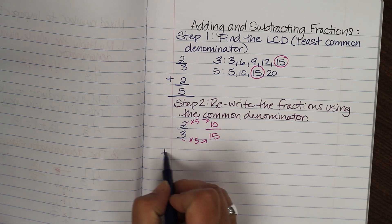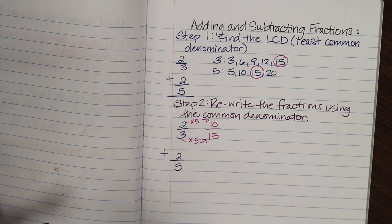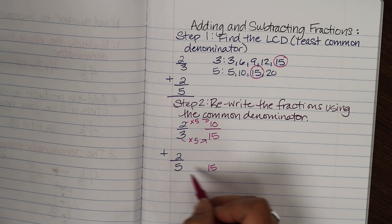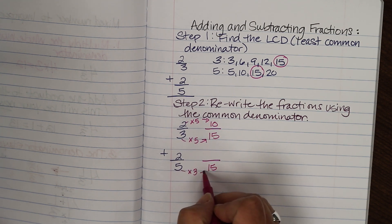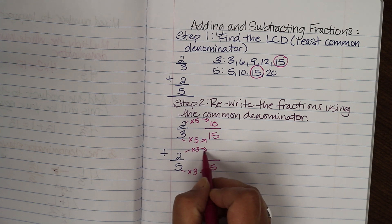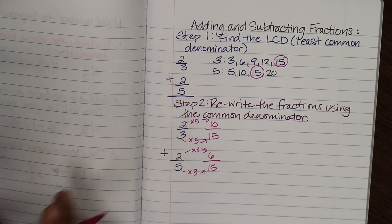The second fraction we had was two fifths. So I'm going to rewrite two fifths. And to go from our common denominator fifteen, from five to fifteen, I multiplied three. And if I multiply three here in the denominator I'm also going to need to multiply three in the numerator. So two times three is six.